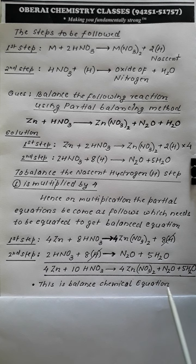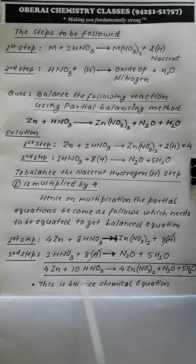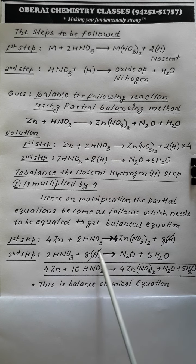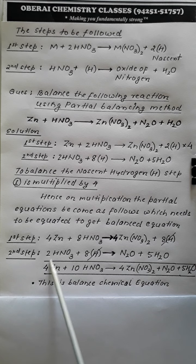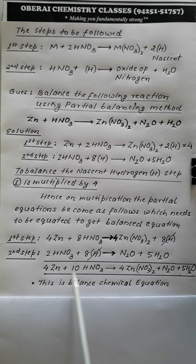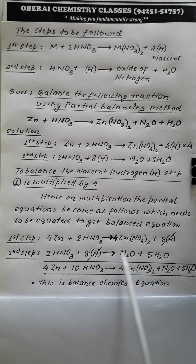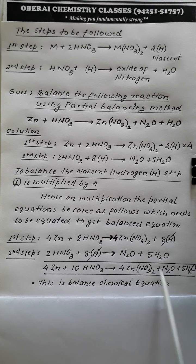Finally, we equate the cross-balanced steps to get the final balanced equation. The 8 nascent hydrogen produced in step one and the 8 nascent hydrogen used in step two cancel out. Adding HNO3 from both steps: 8 + 2 = 10 HNO3. The resulting equation is: 4Zn + 10HNO3 → 4Zn(NO3)2 + N2O + 5H2O.